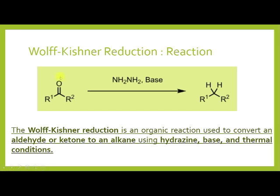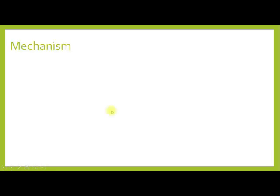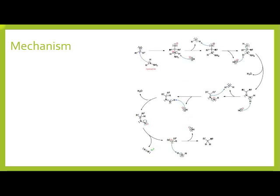The reaction shows a ketone with C=O that is reduced by hydrazine hydrate in the presence of base under thermal conditions to give an alkane. This is called Wolff-Kishner reduction. Now let us see the mechanism — how the carbonyl carbon C=O is reduced to an alkane.